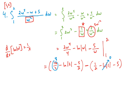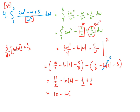I'll leave it as 16 over 2 because I have a negative 5 halves, so this is 11 halves minus ln of 2. Because 2 is positive, I don't need to write it in absolute value. So minus ln of 2 and then minus 1 half plus 5. 11 halves minus 1 half is 10 halves, which is 5. 5 plus this 5 is 10. So we get 10 minus ln of 2.